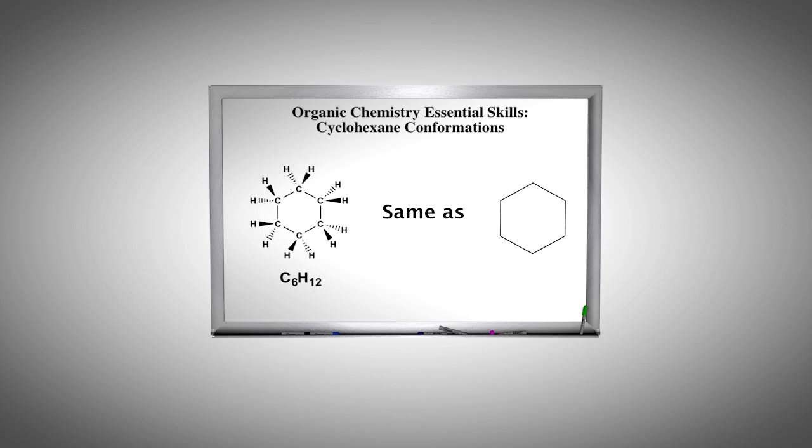From the two-dimensional Lewis structure, it would appear that the internal bond angle for all carbon-carbon bonds is 120 degrees. However, all carbons are sp3 within the cyclohexane ring system.